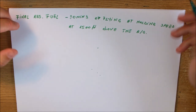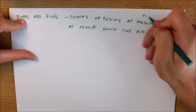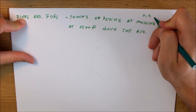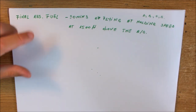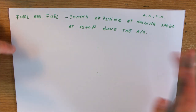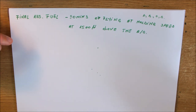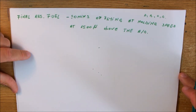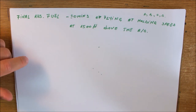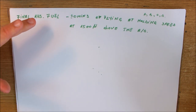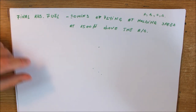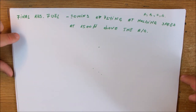Flying at holding speed means using the speed appropriate to your aircraft category — Alpha, Bravo, Charlie, Delta, and so forth — each category has its own holding speed. Also very important: the final reserve fuel should be calculated with the estimated aircraft landing mass at the alternate, or the destination in case you have not planned for an alternate.